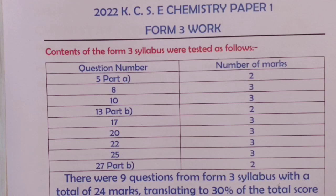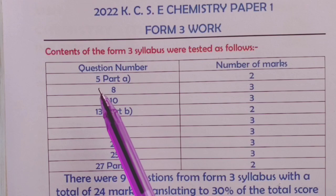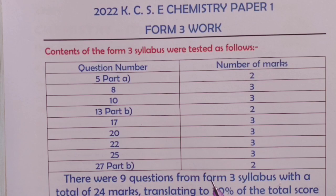It is our pleasure to present Form 3 work as tested in the year 2022. This is 233 stroke 1, chemistry, paper 1. Contents of Form 3 syllabus were tested in 9 questions. These questions had a total of 24 marks that translates to 30% of the total score in chemistry paper 1 for the year. The question numbers are established in this table together with the corresponding marks. It is our pleasure to take you through the expected responses to these questions in this short video.